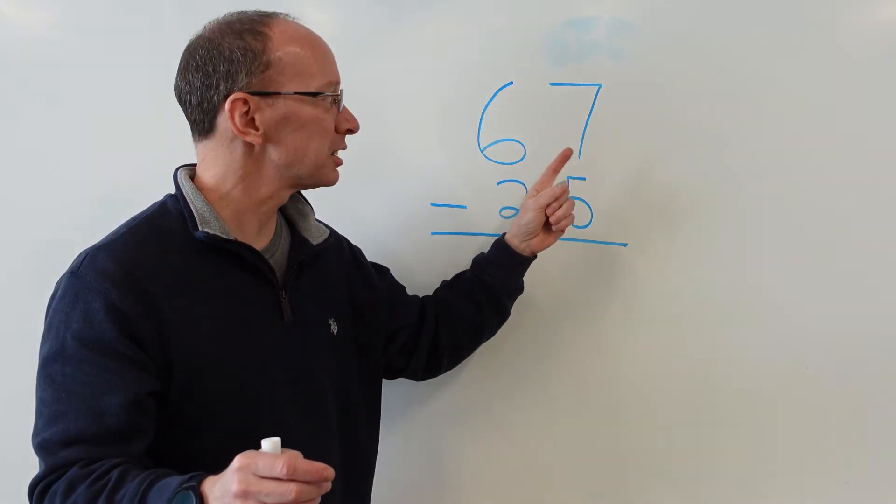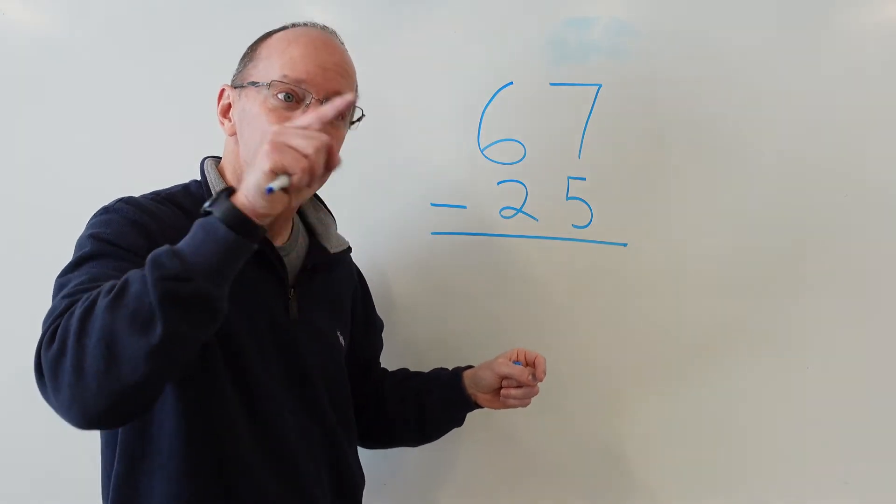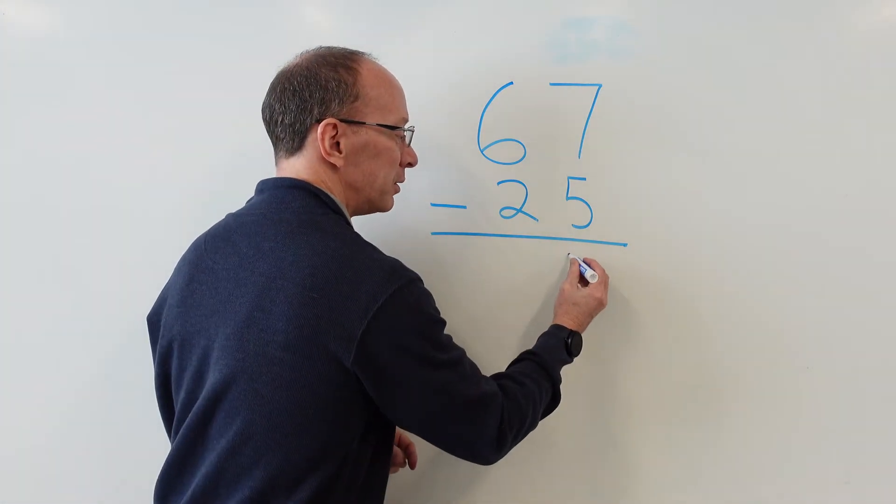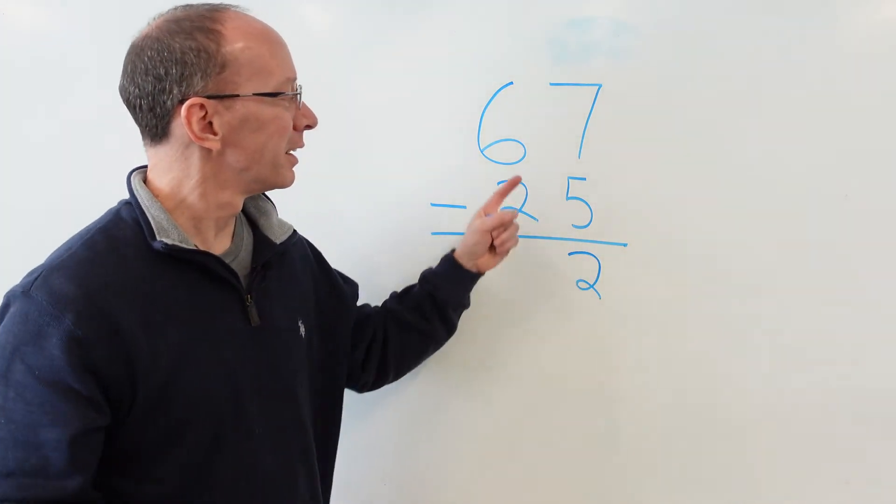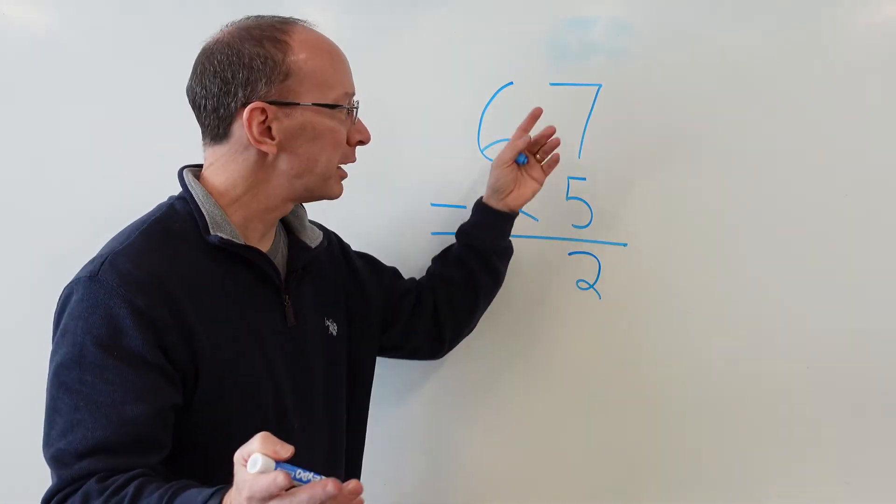So basically you just subtract. 7 minus 5: 5, 6, 7. Put the 2 here. Uno, dos. And now you go right here. You don't have to regroup anything.